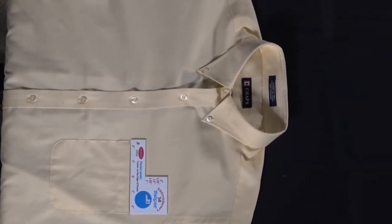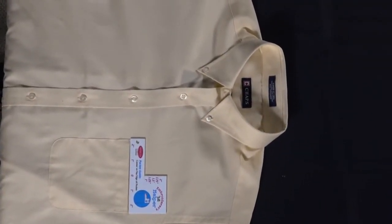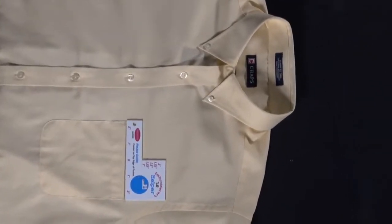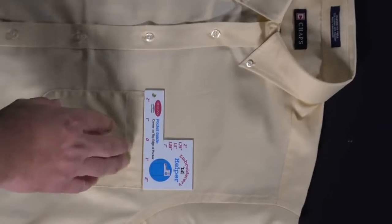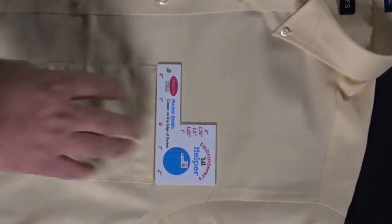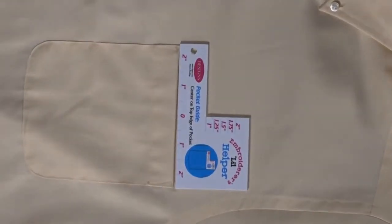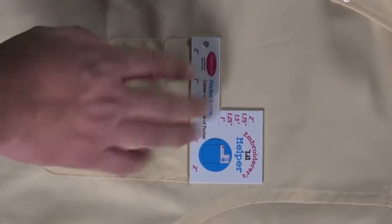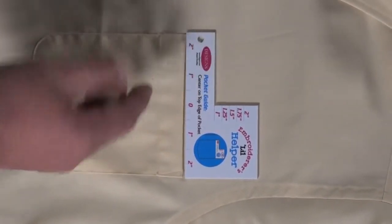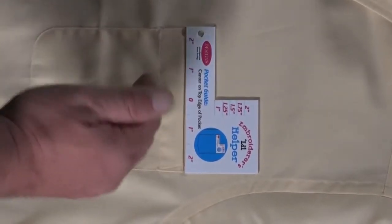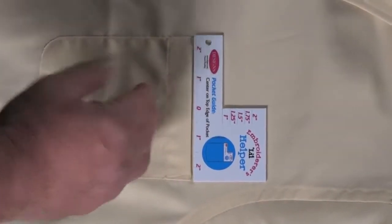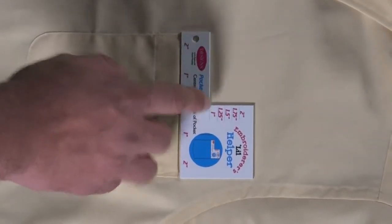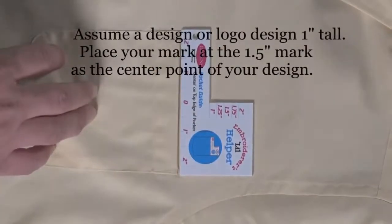The third template that's included with your Hooping Pro full station is called the Embroider's Little Helper. This is designed for doing embroidery above the pocket of your apparel, whether it's for the left chest or the right chest. It is measured from left to right to help find your center. Industry standard for most places is going to say your design should be located the bottom of the design one inch above the pocket. This is the reason this is cut out to this notch to one inch.